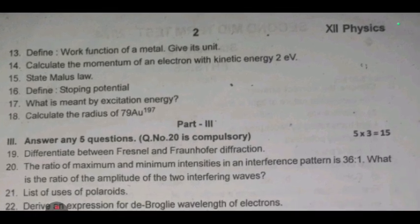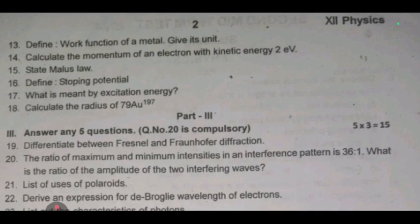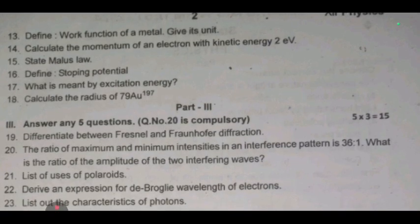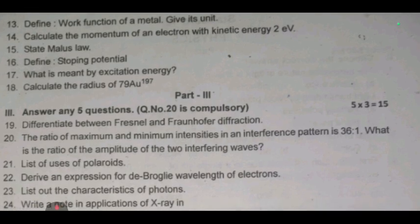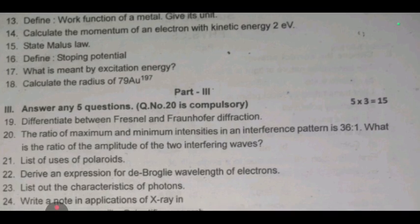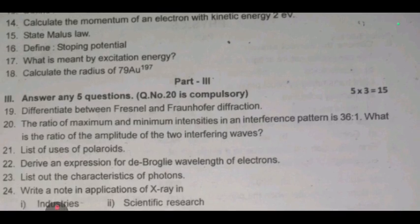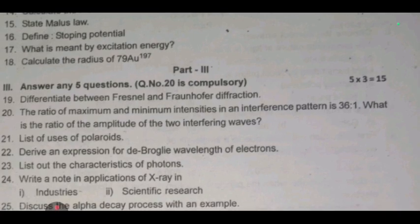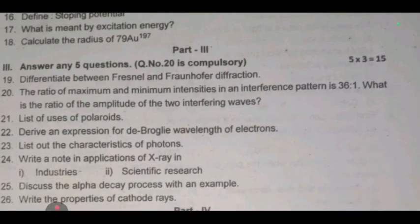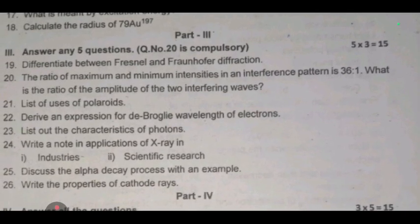Part 3, answer any 5 questions, question 20 is compulsory, three marks. 19, differentiate between Fresnel and Fraunhofer diffraction. 20, the ratio of maximum and minimum intensities in an interference pattern is 36 to 1, what is the ratio of the amplitude of the two interfering waves? 21, list uses of polaroids. 22, derive an expression for de Broglie wavelength of electrons. 23, list out the characteristics of photons.